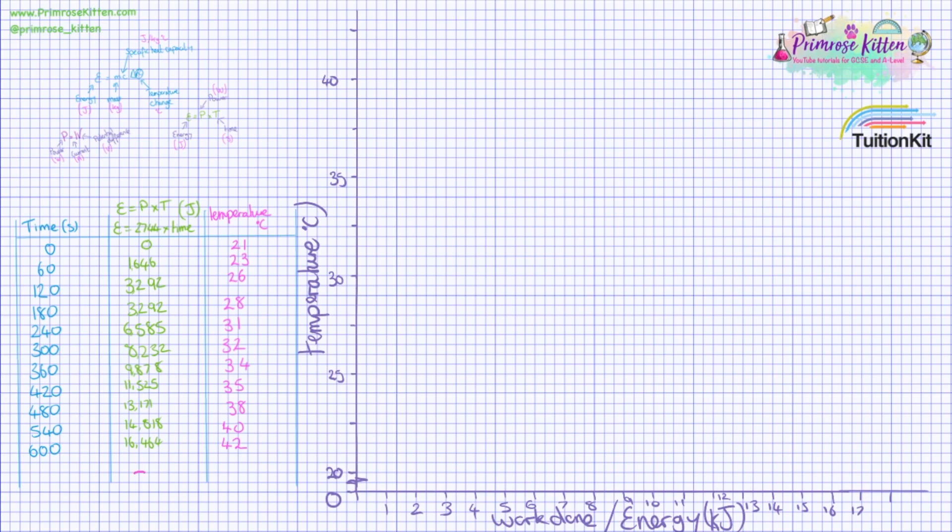Now we've finished the experiment we're going to plot the graph. And on the x-axis we are going to be plotting the energy or the work done. They're the same value. And I'm going to plot this in kilojoules. So it's simply just the first value. And then up the y-axis we're going to be plotting temperature.